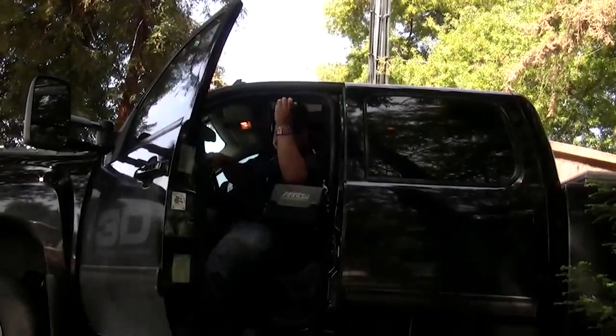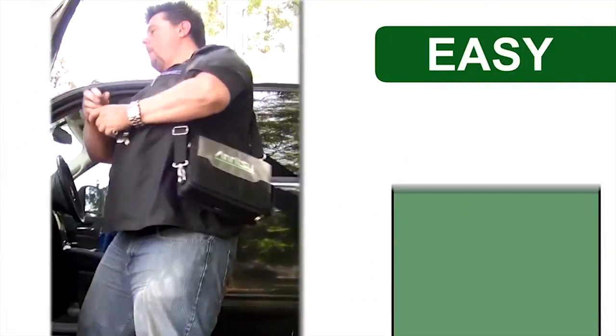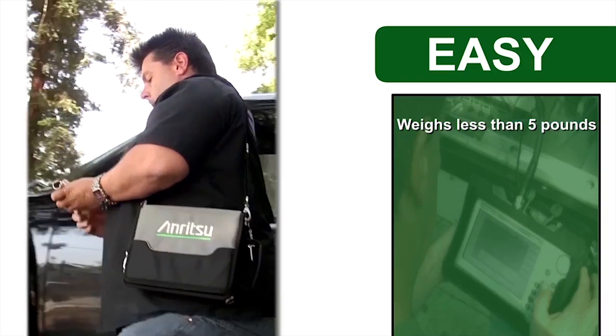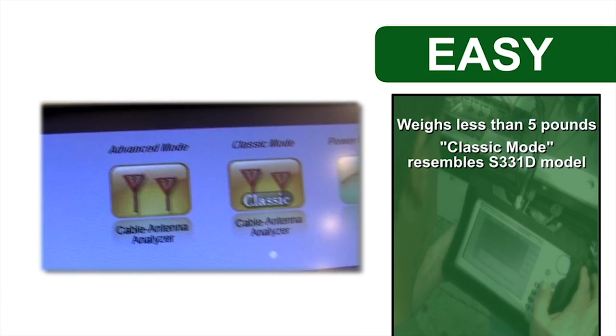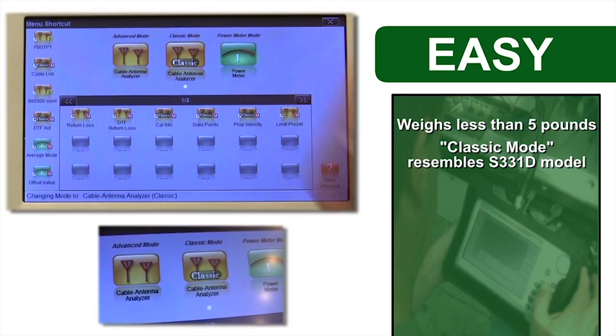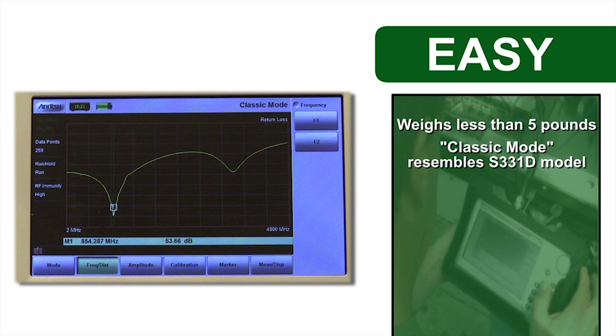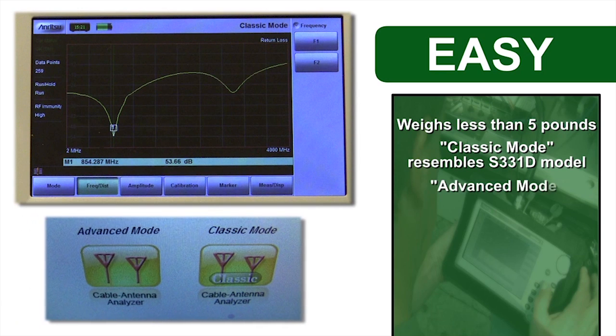The SightMaster S331L weighs less than 5 pounds and is designed for ease of use. But to make the transition even simpler, we've added a familiar classic mode which resembles the interface of your previous S331D or earlier model. At your own pace,